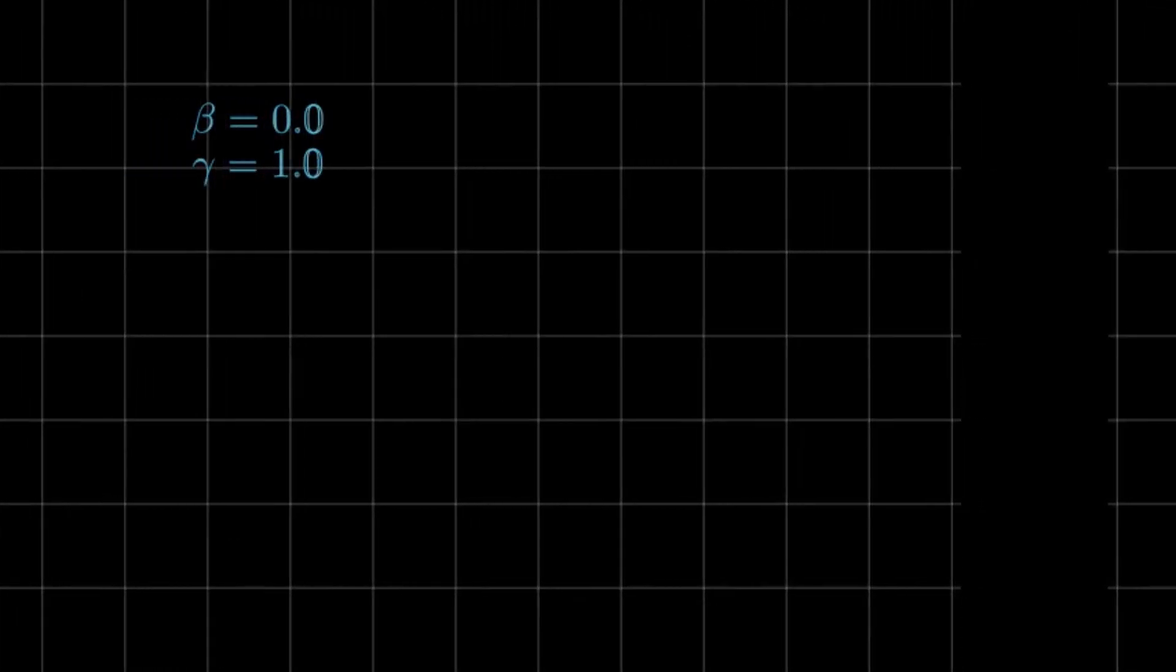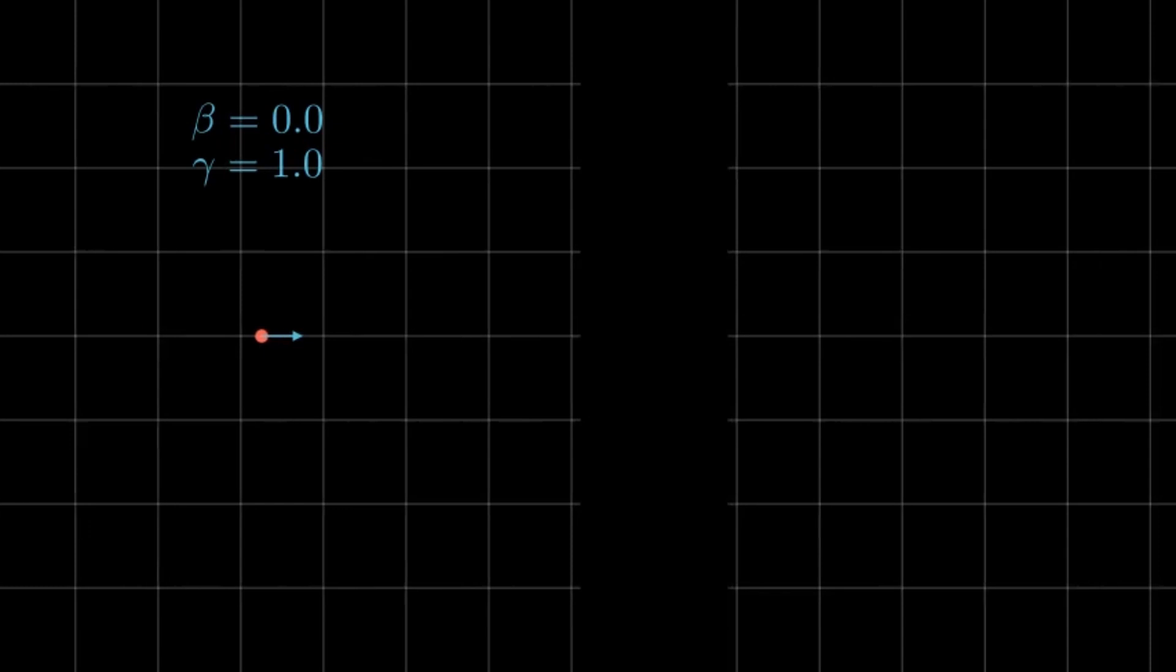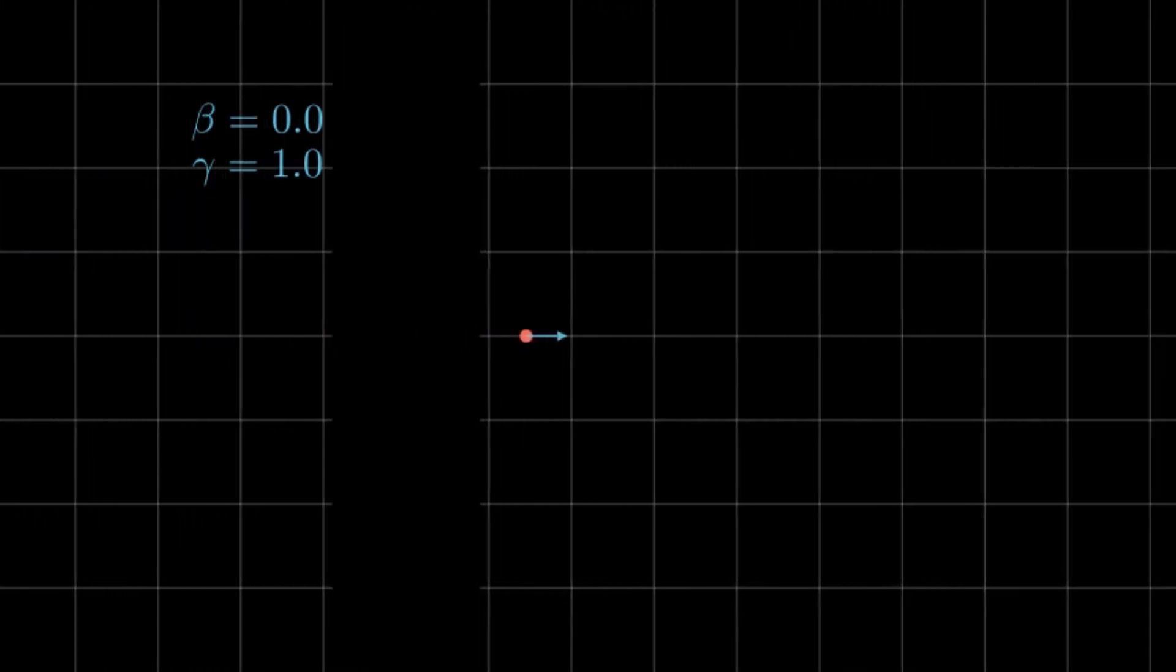To visualize the beaming effect, let us look at an electron moving to the right at a constant, non-relativistic velocity. That is, beta is close to zero, and gamma is very close to one.